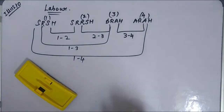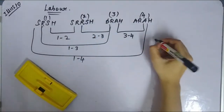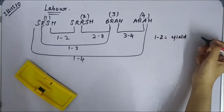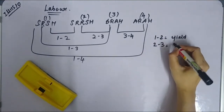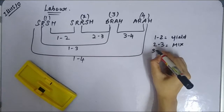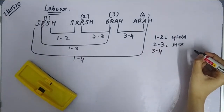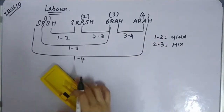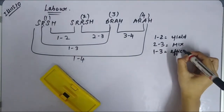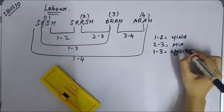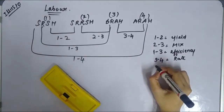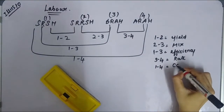For labor variances: the difference 1 to 2 is labor yield variance, which is a sub-efficiency variance. The difference 2 to 3 is the mix variance, also called gang variance or gang composition variance. The difference 1 to 3 is labor efficiency variance. The difference 3 to 4 is labor rate variance. And 1 to 4 is labor cost variance.